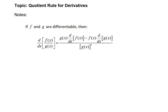The rule states this: the derivative of this quotient is, in the numerator, the denominator function g of x times the derivative of the numerator function f of x, minus the numerator function f of x times the derivative of the denominator function g of x, all over the denominator function g of x squared.